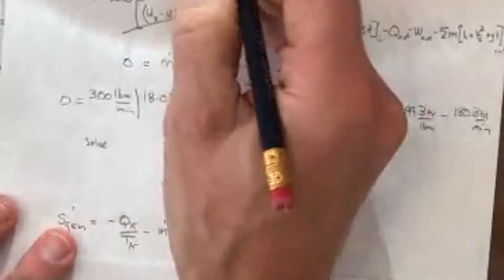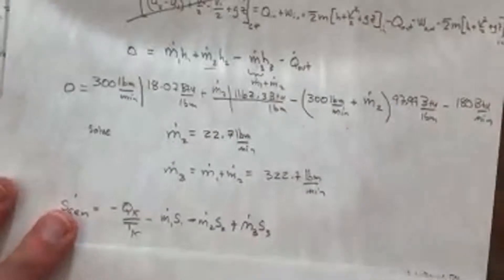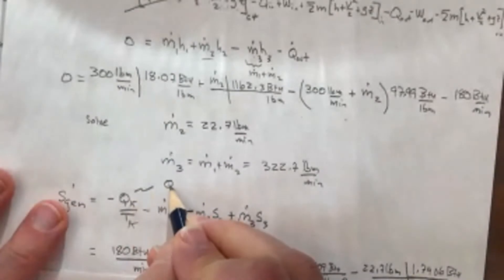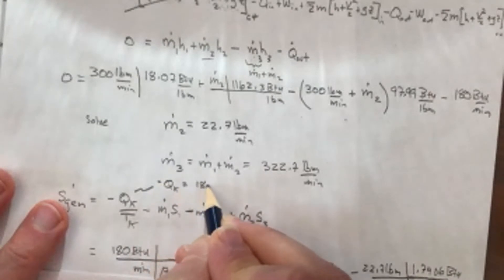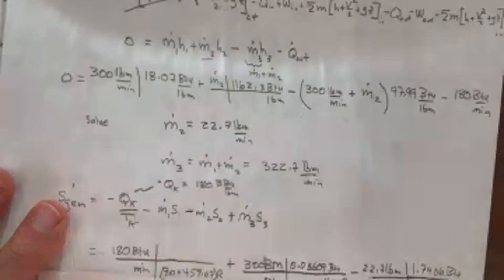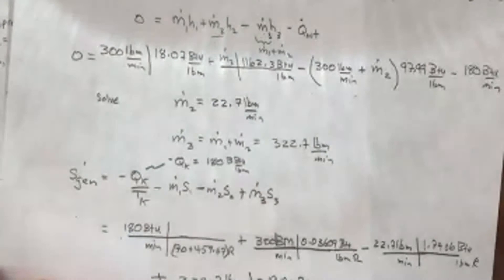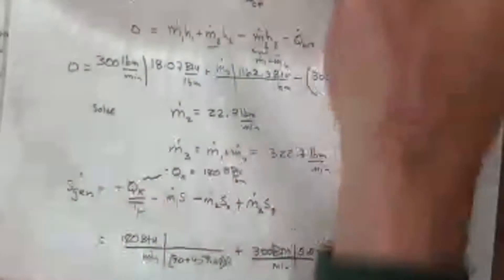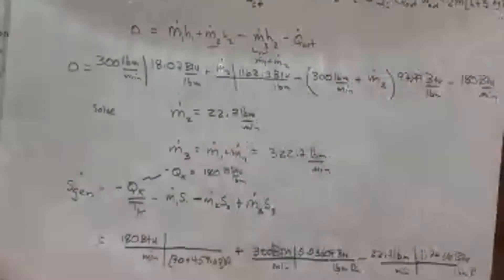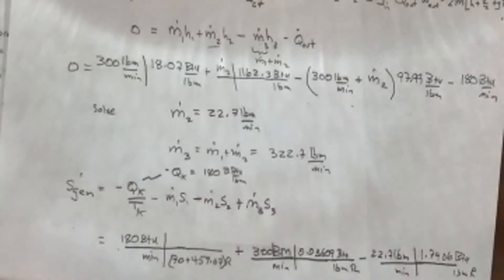So when I plug in this Q out in for Q really, Q is going to be minus Q for 180 degrees, 180 BTUs per pound mass. So this minus times this minus is going to give me a plus. So this Q out will end up being plus 180 over this bar field temperature of 70 degrees, plus, of course, to get it into ranking.